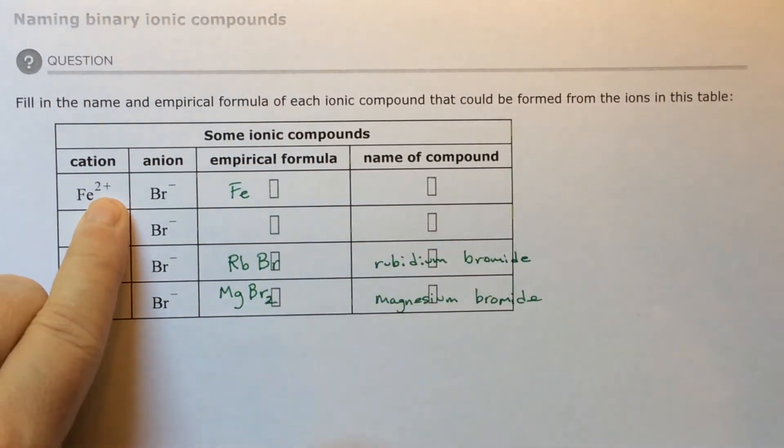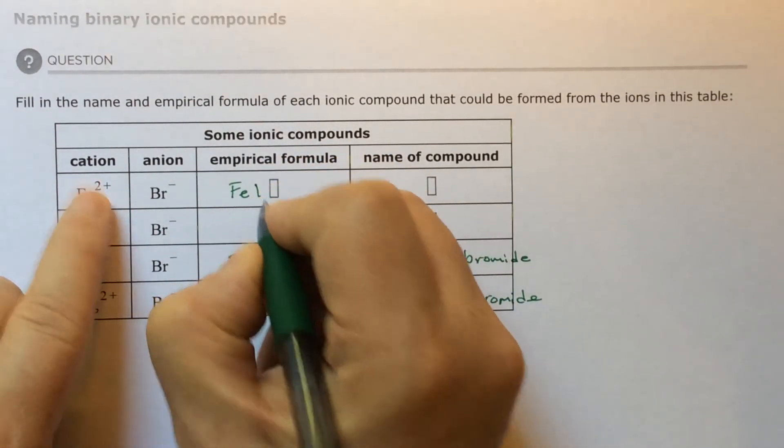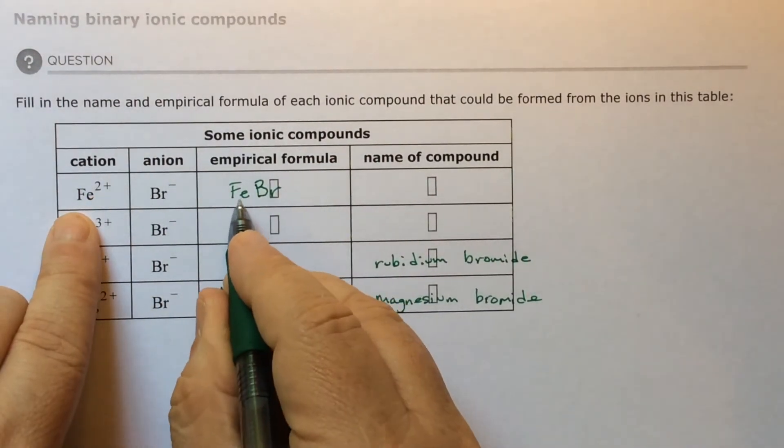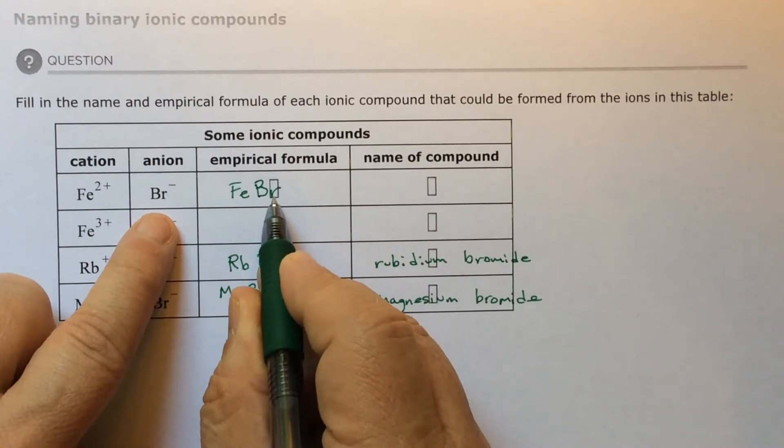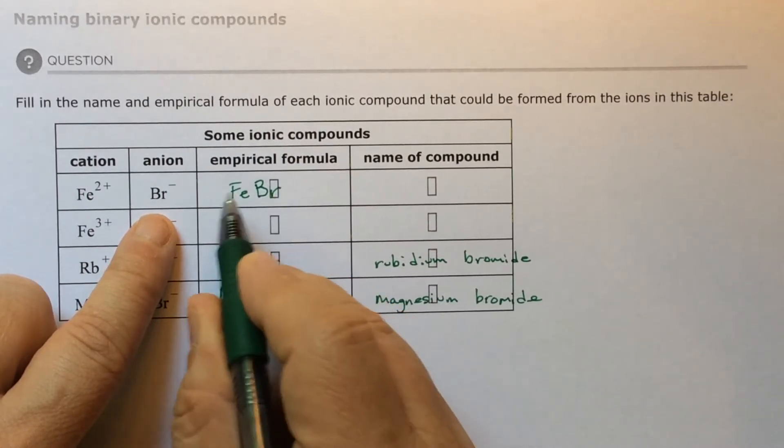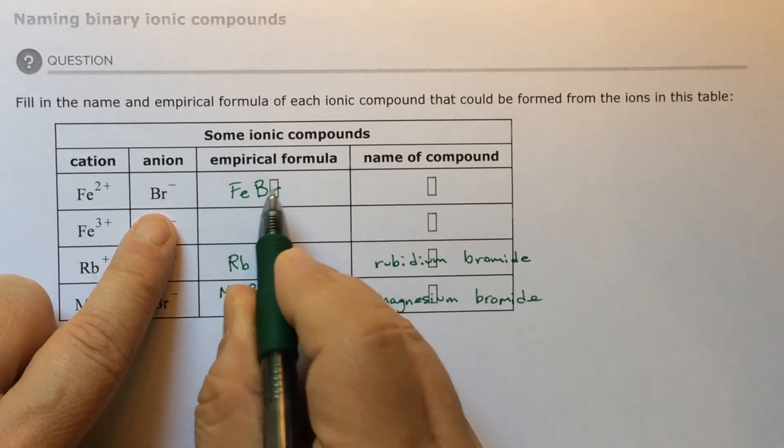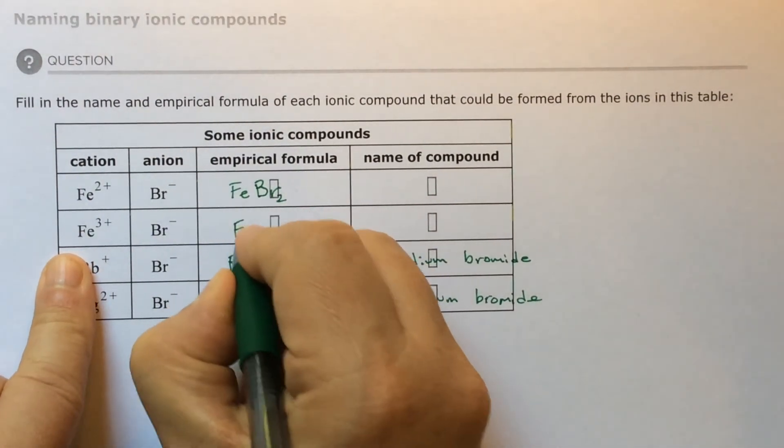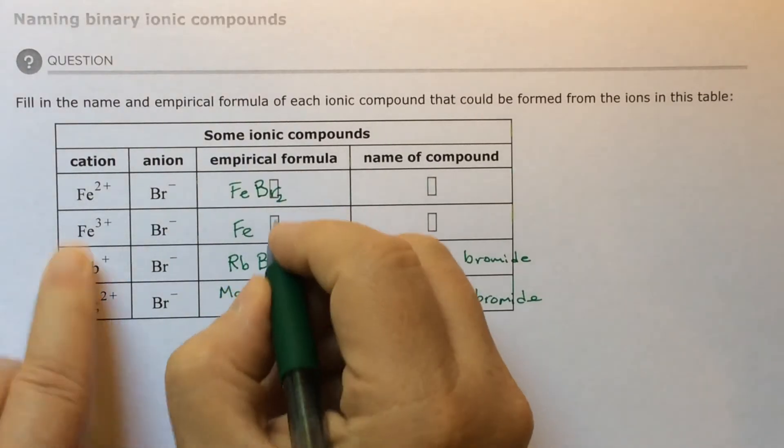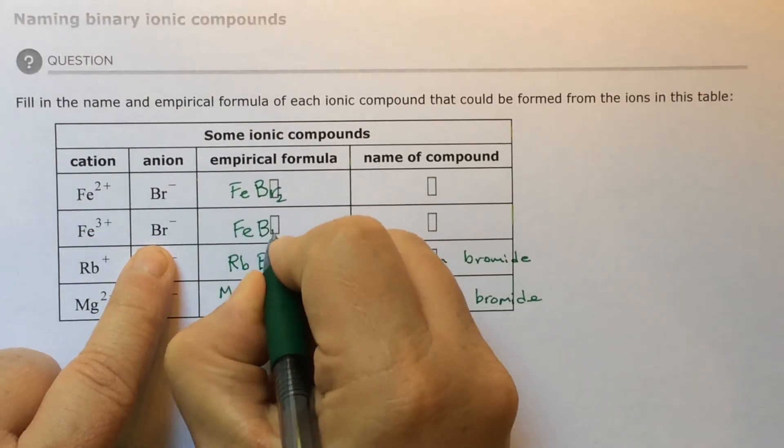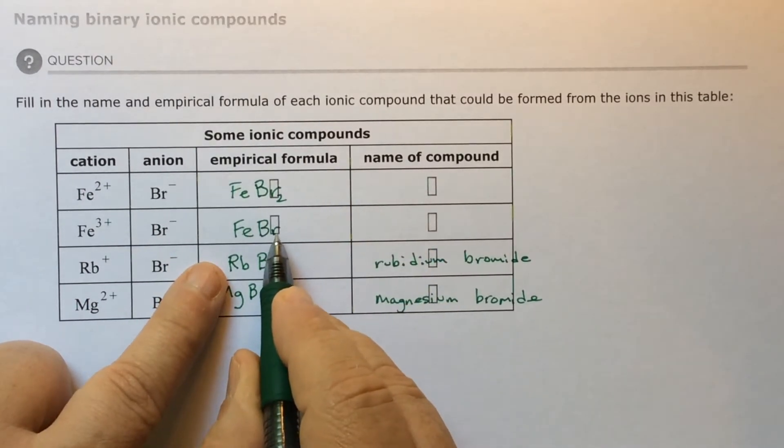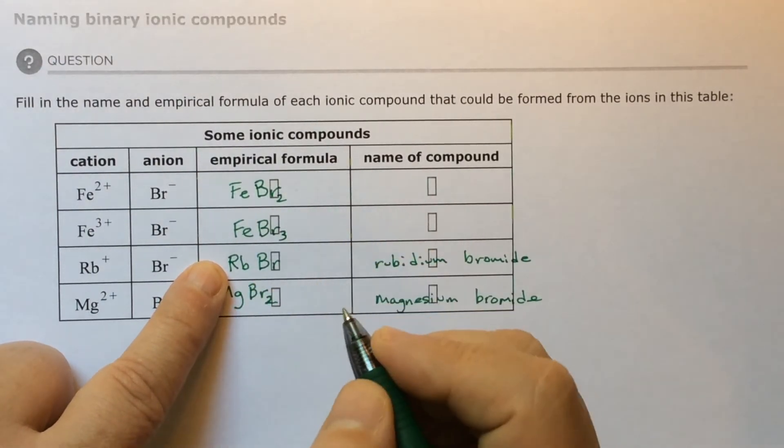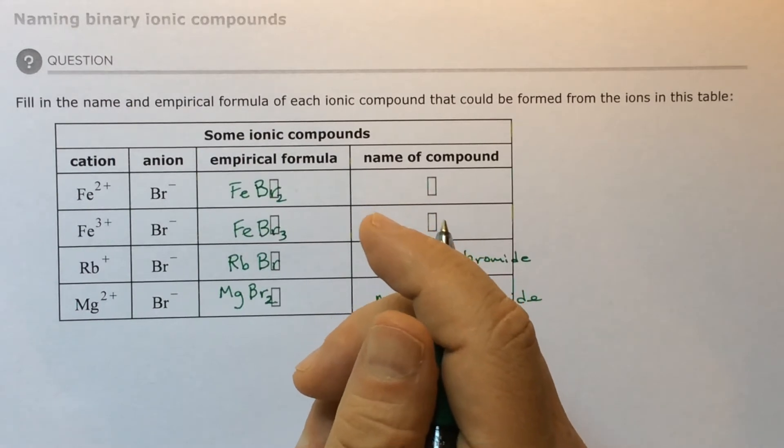Let's do the easy part first. I've got Fe. Hold in your mind that it's positive two because you can see that cation. Then Br. I've got positive two here, negative one here. How many negative ones am I going to need to balance? I need two, so this is FeBr2. Let's do it over here. Fe is now positive three. Here's Br again. I'm going to need three bromides to balance a positive three.